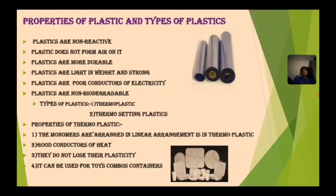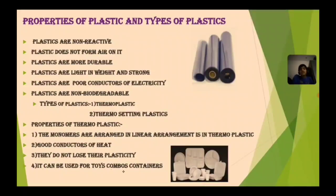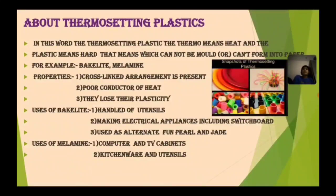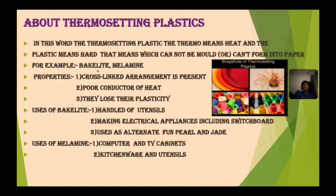Properties of thermoplastic: the monomers are arranged in a linear arrangement. It is a good conductor of heat. It does not lose its plasticity. It can be used for toys, combs, and containers. About thermosetting plastic — the word 'thermo' means heat and 'plastic' means hard — which means it cannot be molded into different forms. For example, bakelite and melamine.